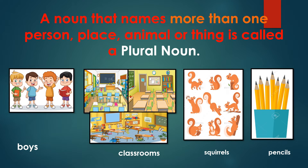So children, in the picture there are four boys — B-O-Y-S, boys. There are three classrooms, so we say them as classrooms. Can you count the number of squirrels over here? Very good — nine squirrels, they are more than one, so squirrels. And last, pencils — how many pencils are there? Seven pencils, more than one, therefore pencils.